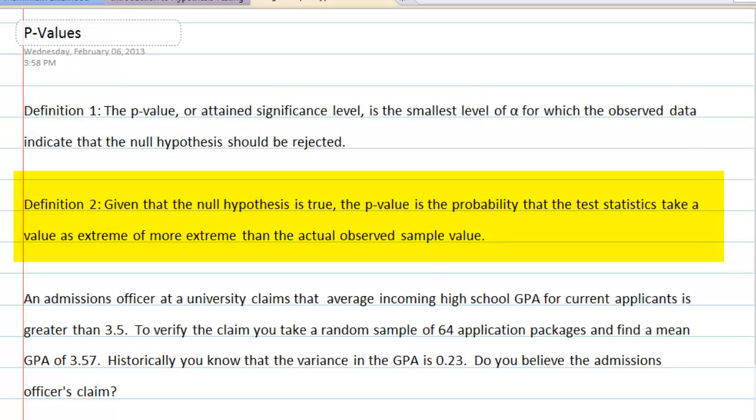I prefer the second. Given that the null hypothesis is true, the p-value is the probability that the test statistic takes a value as extreme or more extreme than the actual observed sample value.